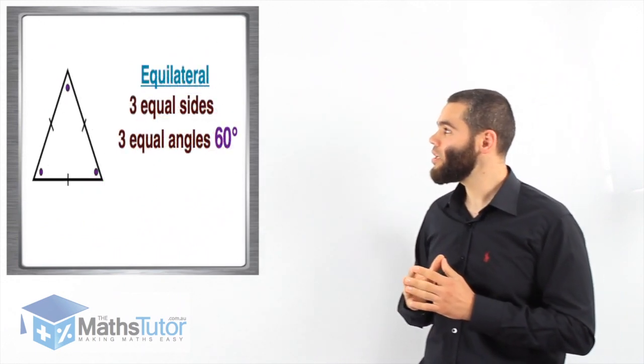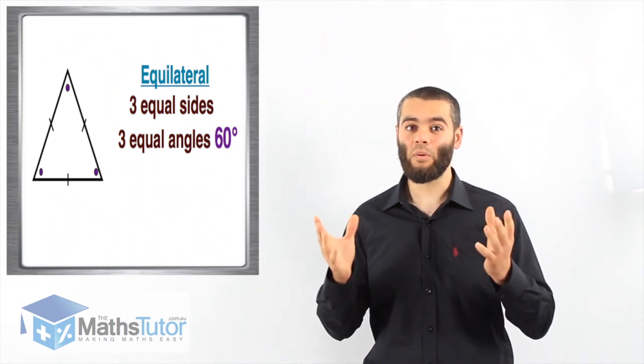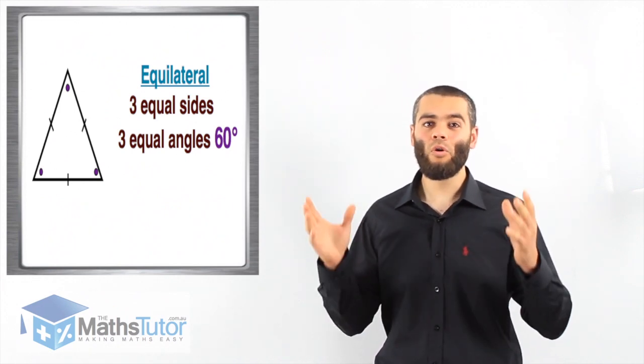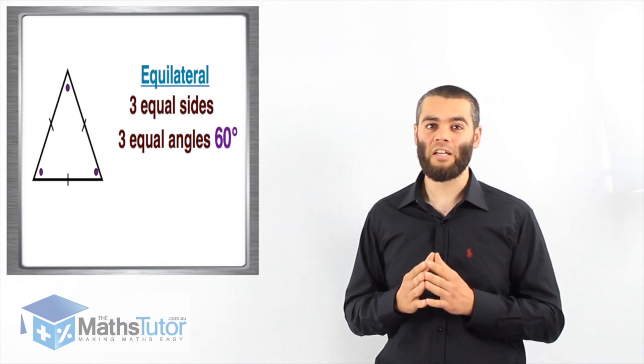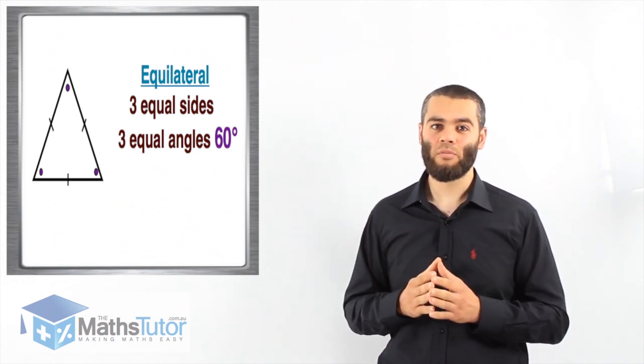Then we have what we know as the equilateral triangle. As the name suggests, equilateral triangle means all the sides are equal. So if one side was seven, all the other sides are going to be seven.